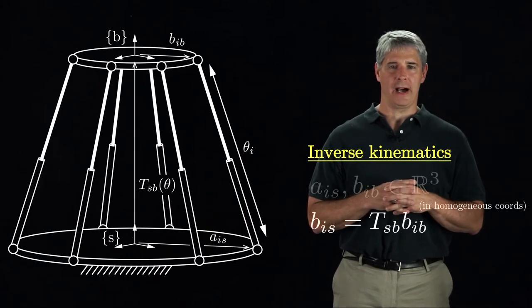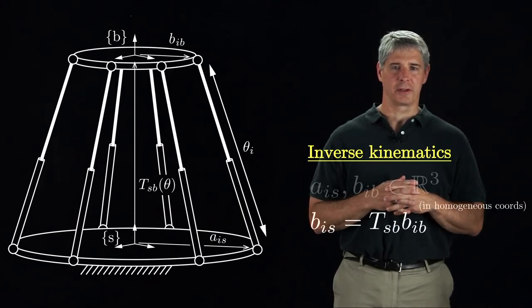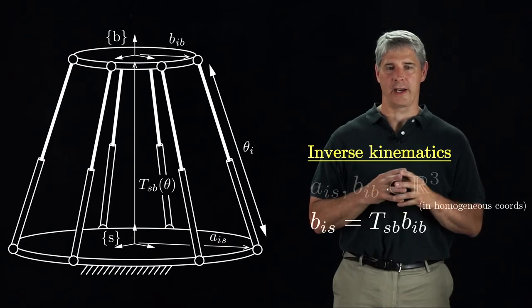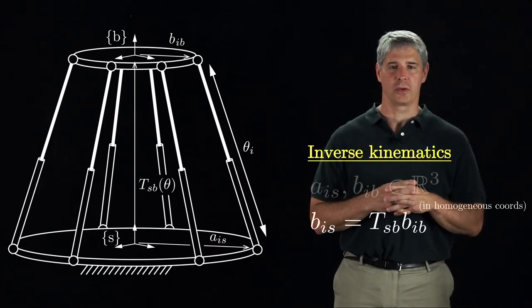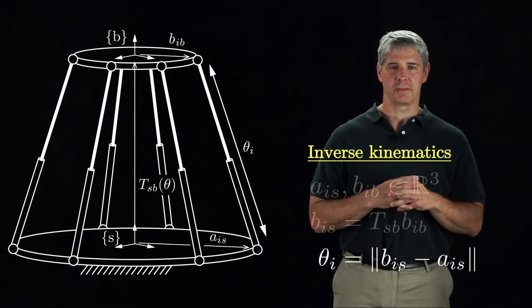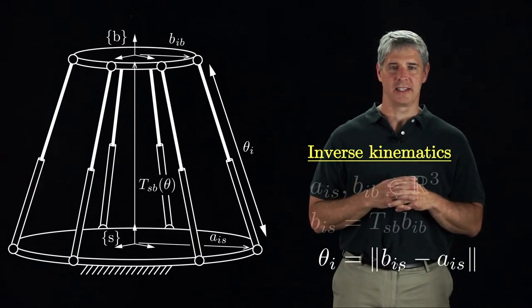We can transform B i b to the S frame by premultiplying by the desired end effector configuration, TSB, provided we represent the vectors in homogeneous coordinates. Now we can calculate the prismatic joint value theta i as the distance between B i s and A i s.